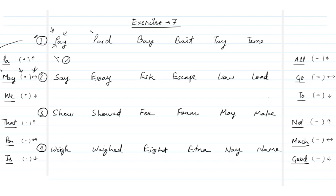Let's move to the next one. We have the word 'paid'. Again the 'a' vowel sound is coming, so here also we will be putting a high dot as the 'a' vowel, like in 'may'. First we have the 'p' character, then the 'a' vowel, then the 'd'. So first we make 'p', then add a high dot for the 'a' vowel, then attach the 'd' character which is a dark stroke. This is our word 'paid'.